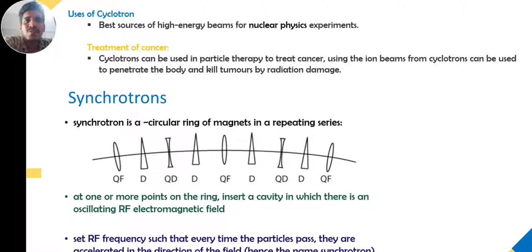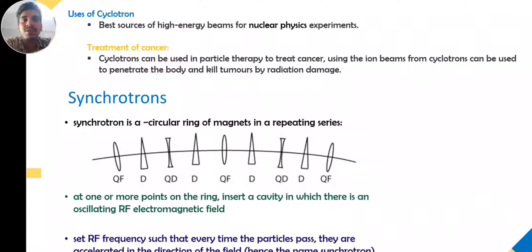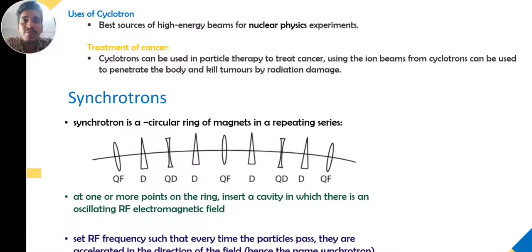The cyclotron is one of the best sources of high-energy beams for nuclear physics experiments in a controlled laboratory or hospital setup. Treatment of cancer can also utilize cyclotron particles — particle therapy uses beams from the cyclotron to penetrate the body and kill tumors by radiation damage.